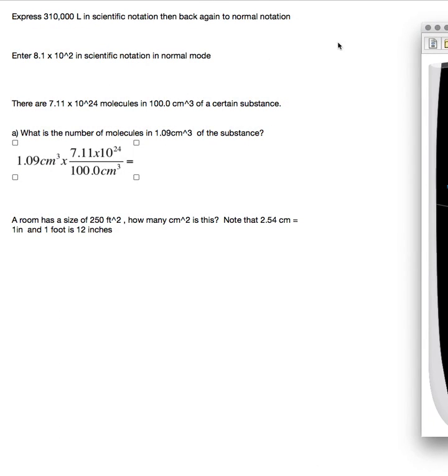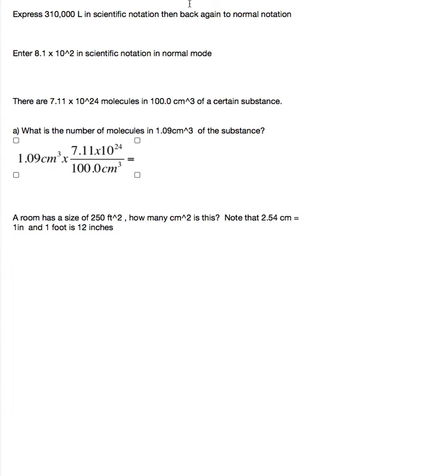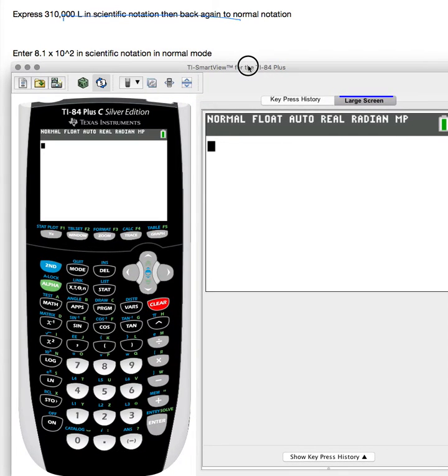We have another one which reads, so I'll go ahead and I'll scratch this one off. We've finished this one here. I'll just kind of scratch that off. And now we're going to do enter 8.1 times 10 to the second in scientific notation in normal mode. So you don't have to be in scientific notation to do stuff in scientific notation.